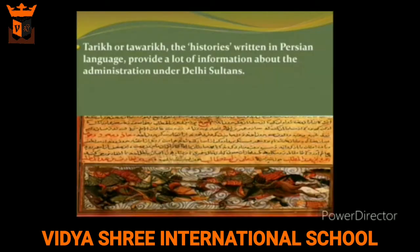Now the question comes: how do we know about the Delhi Sultanate? We get information from coins, inscriptions, and architecture. But most important among these are histories, called Tarikh in singular and Tawarikh in plural. These Tawarikh — histories written in the Persian language — provide a lot of information about the administration under the Delhi Sultanate.